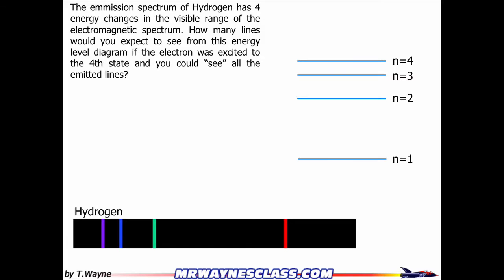So here's the solution to the example problem. The emission spectrum of hydrogen has four energy changes in the visible range of the electromagnetic spectrum. How many lines would you expect to see from this energy level diagram if the electron is excited to the fourth state and you could see all of the emitted lines? And I put see in quotes because really what I mean is detect all the emitted lines.